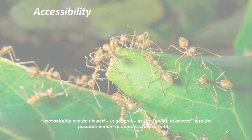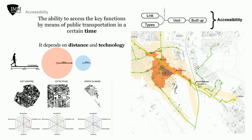Accessibility can be viewed, in general, as the ability to access and the possible benefit to some system or entity. In IMM, accessibility emerges by the combination and synergetic integration of links, type of uses, voids, and volumes. The purpose of conducting accessibility analysis is that by the result, we can understand the uneven distribution of key functions and transportation nodes, so that the weaker parts in terms of not easily accessible areas in the city can be identified. Accessibility is the number of jobs or key function areas reachable within 20 minutes using different public transportation modes.